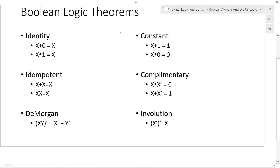Next we have the constant theorem. Any value ORed with 1 equals 1: 0 OR 1 is 1, and 1 OR 1 is 1. Also, x ANDed with 0: if x is 1 and you AND it with 0, the result is 0. If x is 0 and ANDed with 0, the result is still 0. These are the constant theorems.